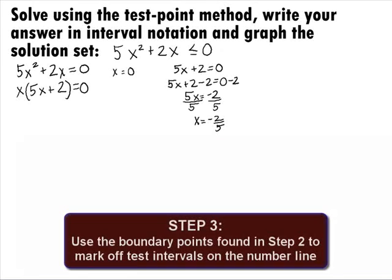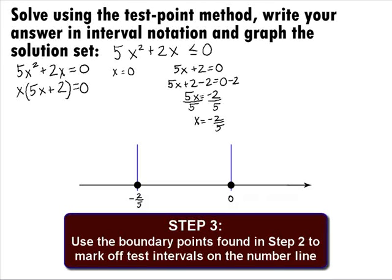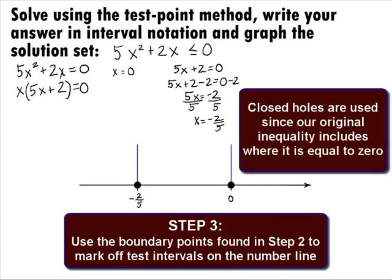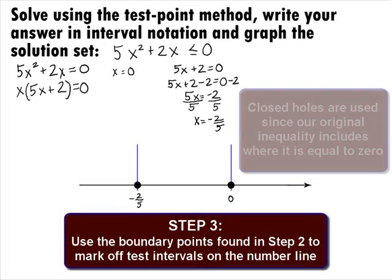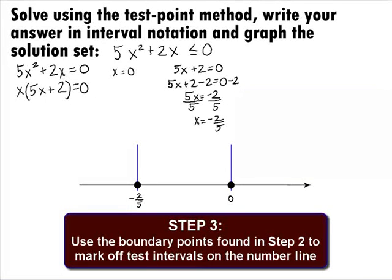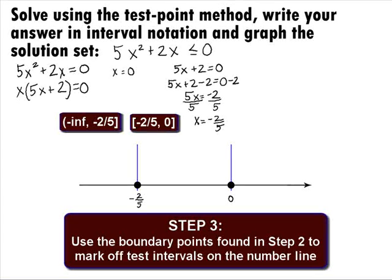In Step 3, we want to use the boundary points from Step 2 to mark off test intervals on the number line. We have marked off our boundary points of negative 2 fifths and 0. Note that we are using closed holes at the two points because our original inequality did include where it is equal to 0. Our boundary points mark off three sections on the graph: negative infinity to negative 2 fifths, negative 2 fifths to 0, and 0 to infinity.